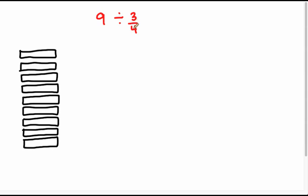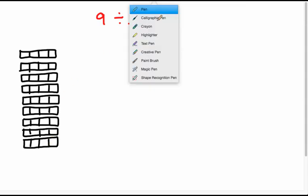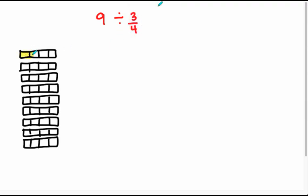So now what I'm going to do is partition or break up each of these nine whole pieces into four equal parts, because that's what my units are that I'm trying to make groups of. Now I'm going to shade in all nine of these wholes, because that's what my dividend is.